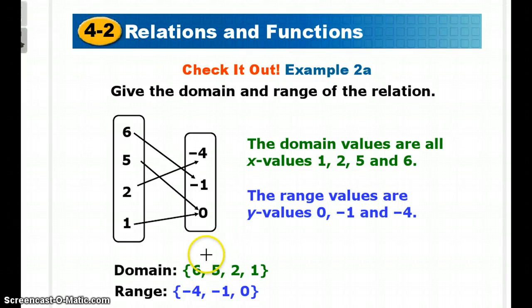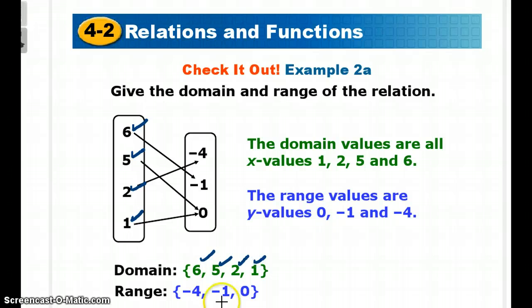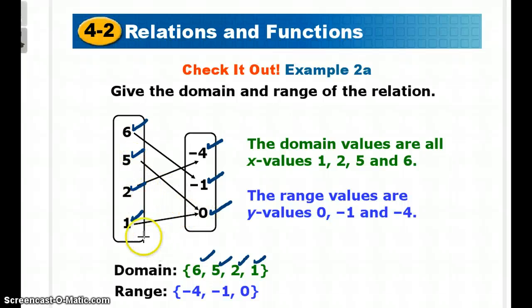In this particular mapping diagram, the x values are 6, 5, 2, and 1, so my domain is limited to those specific numbers: {6, 5, 2, 1}. My range — the only output values I can get — is {-4, -1, 0}. I don't have any numbers in between; those are it. You can see that 5 produces a 0 and 1 also produces a 0, showing that a mapping diagram doesn't necessarily have the same number of x's as y's.